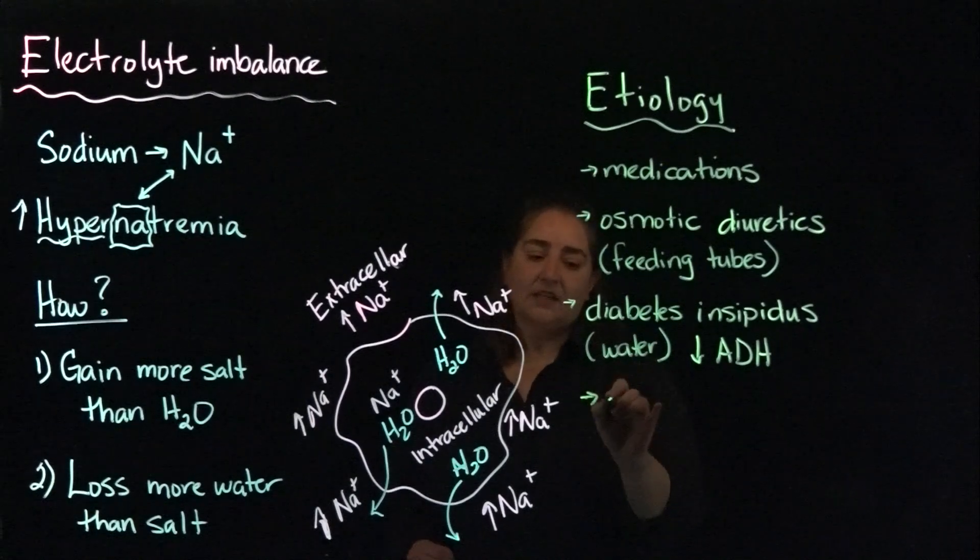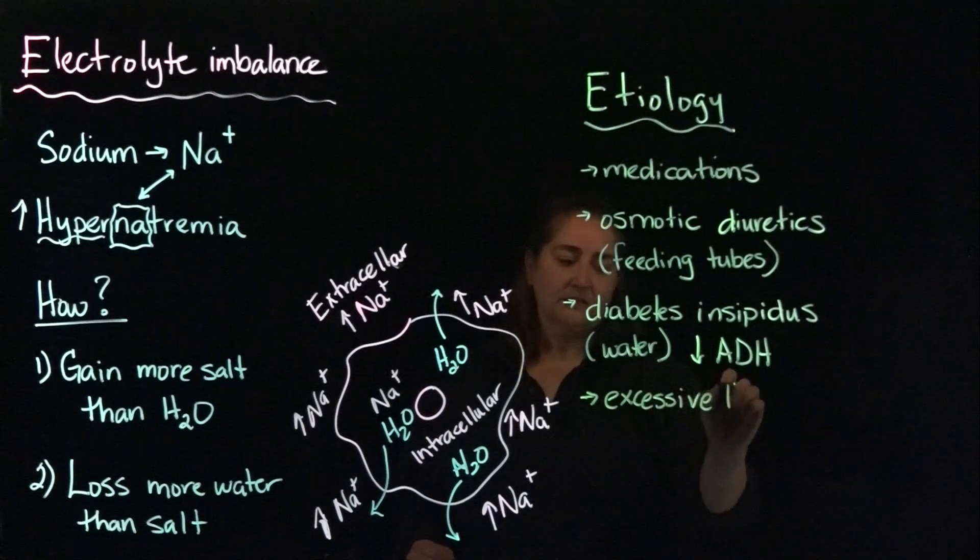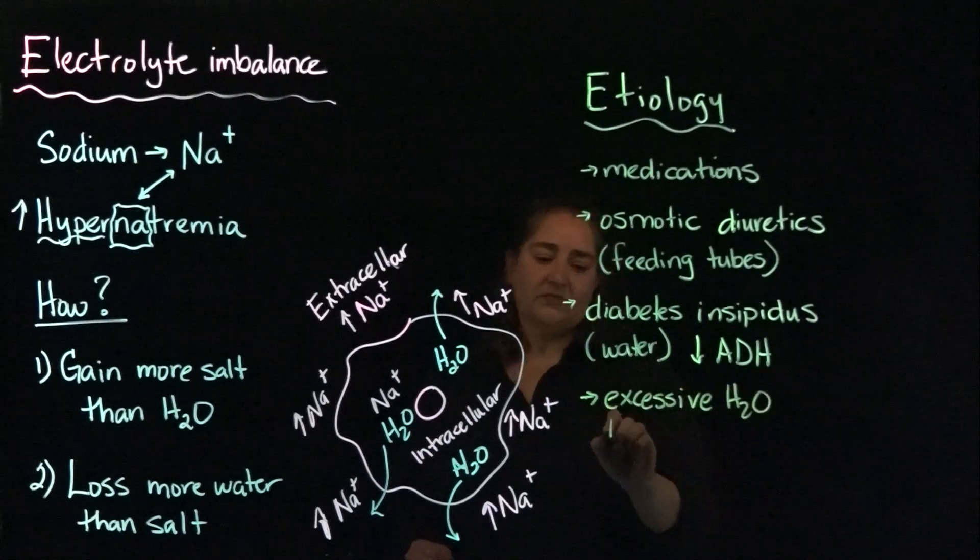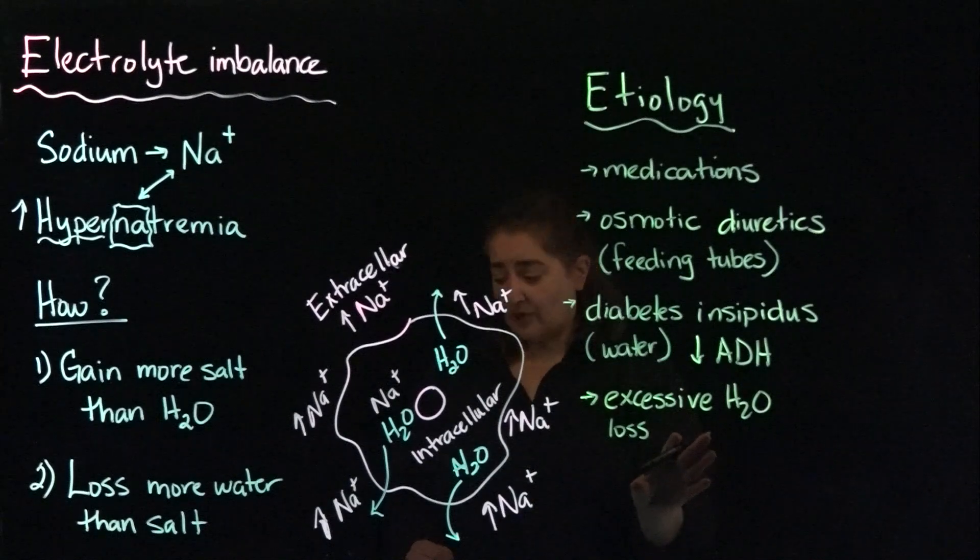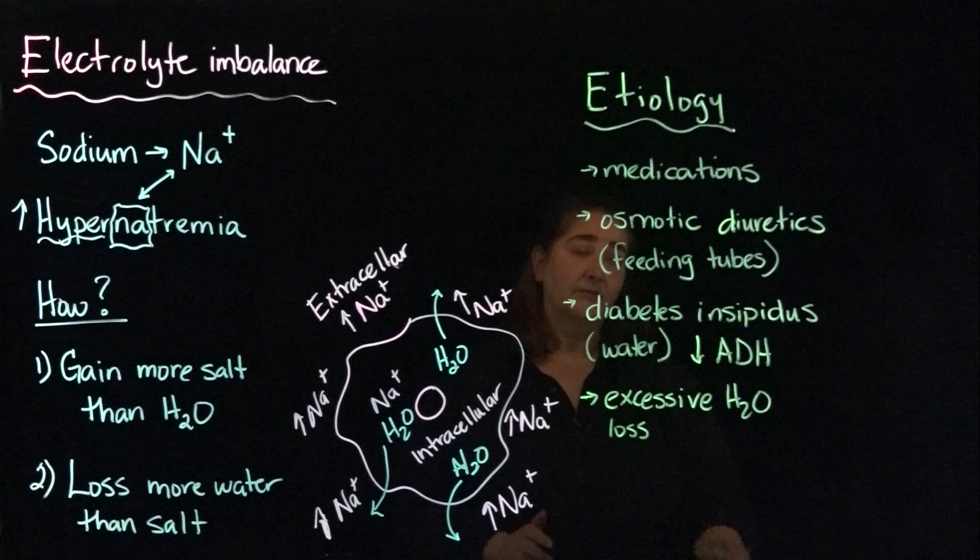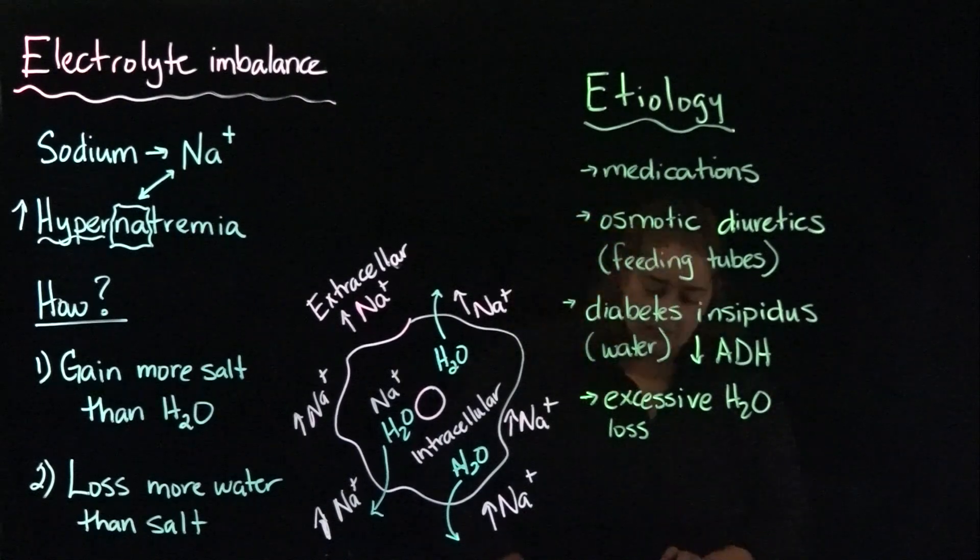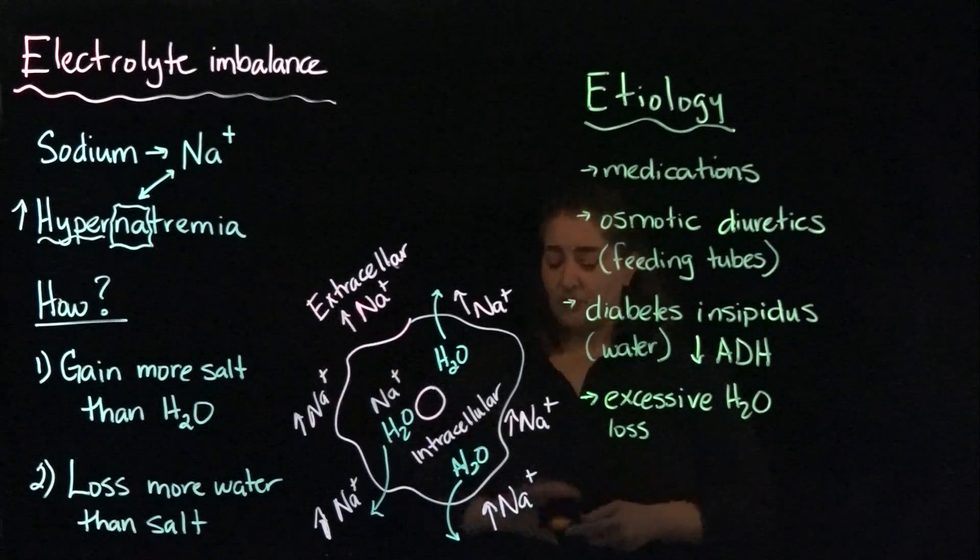And then any excessive water loss. We covered those in the previous video, so things like diarrhea, vomiting, massive blood loss or hemorrhaging can result in this. So those are some of the causes associated with hypernatremia.